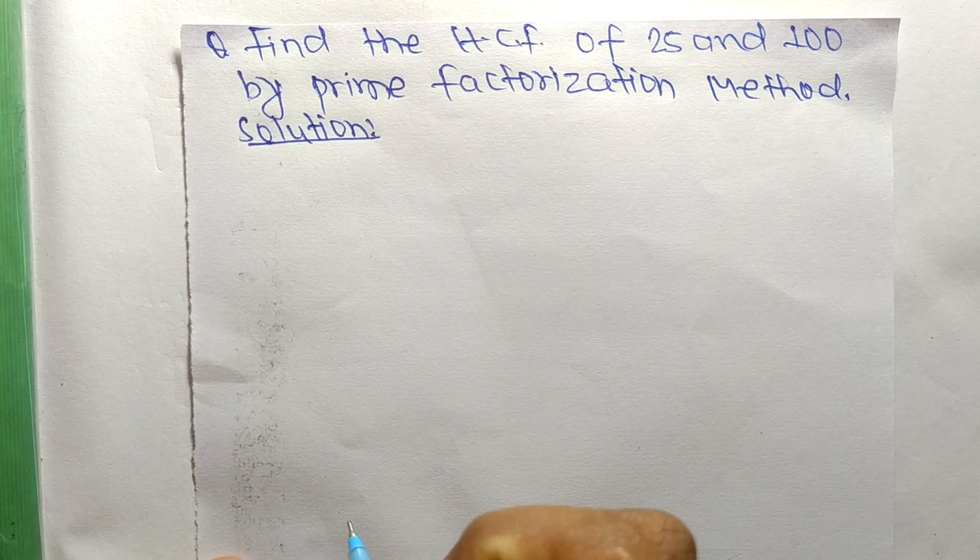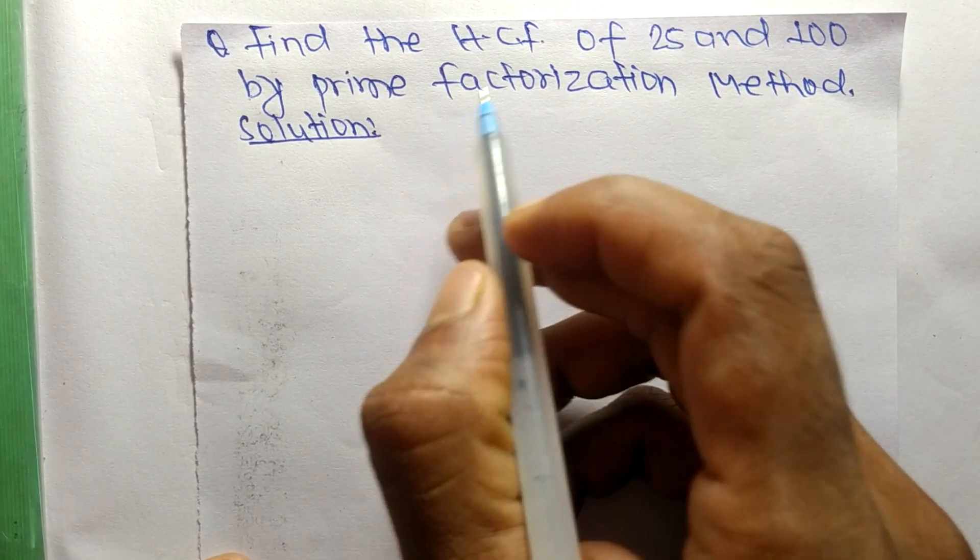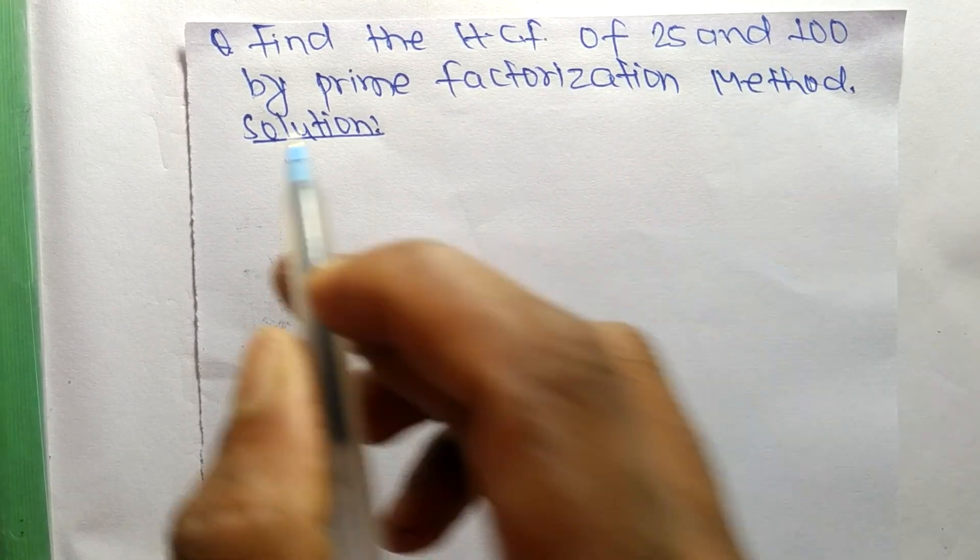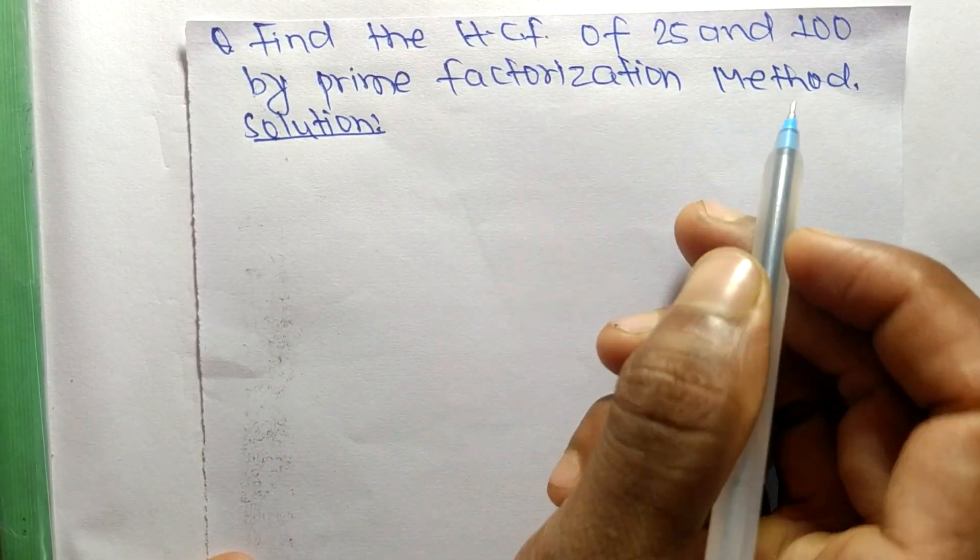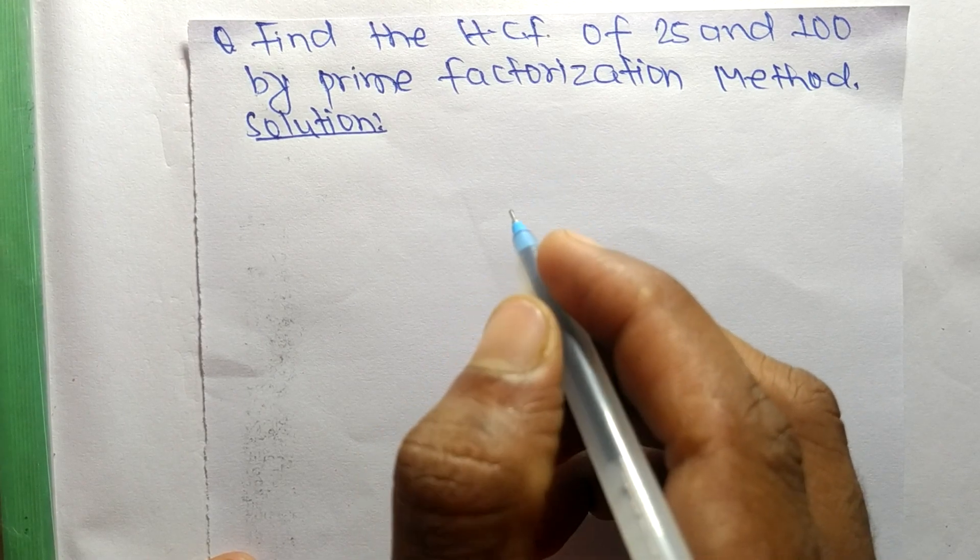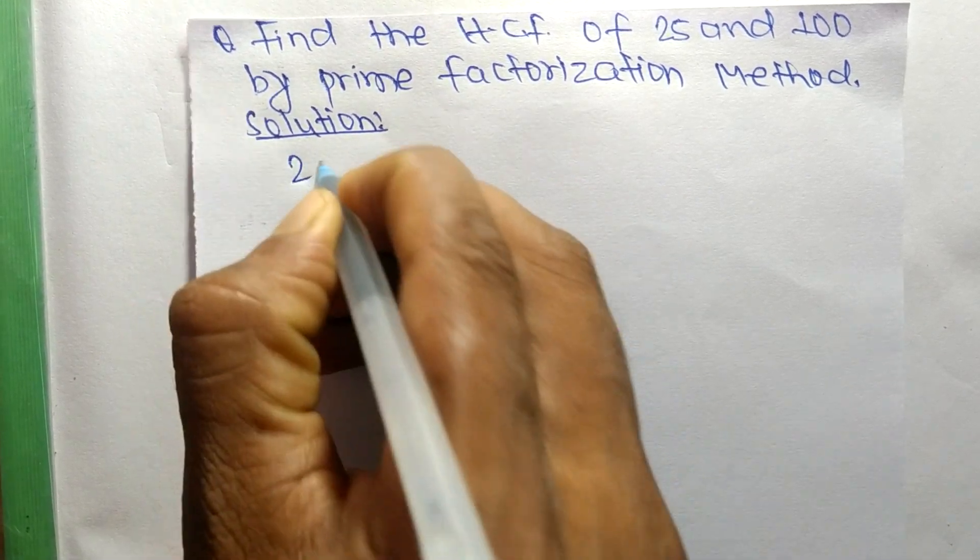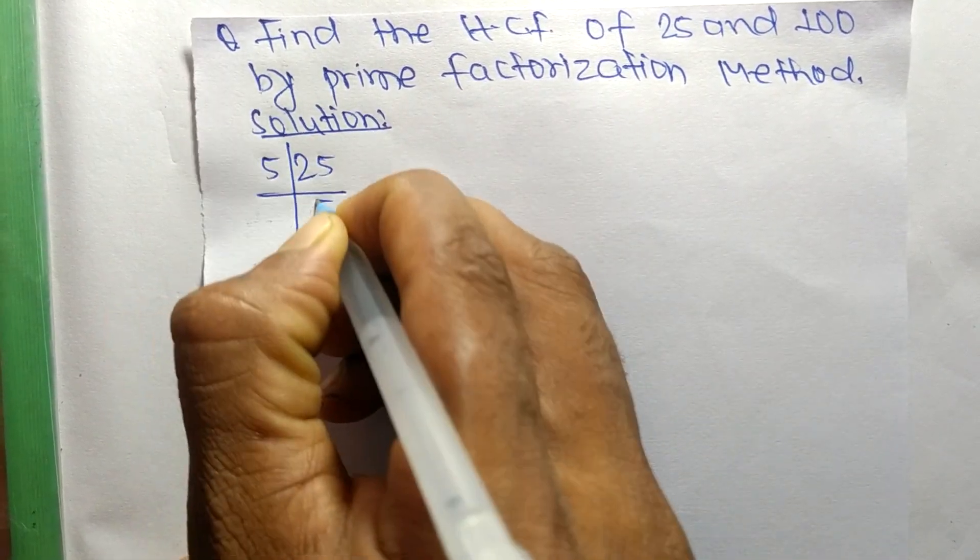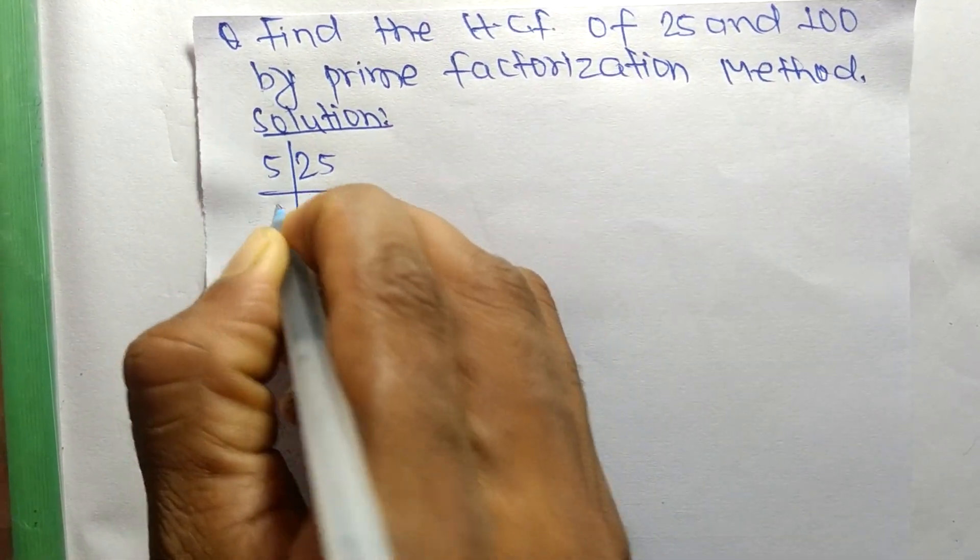Today in this video we shall learn to find the HCF of 25 and 100 by prime factorization method. First we find out the prime factors of 25, so it is 5 times 5 which means 25.